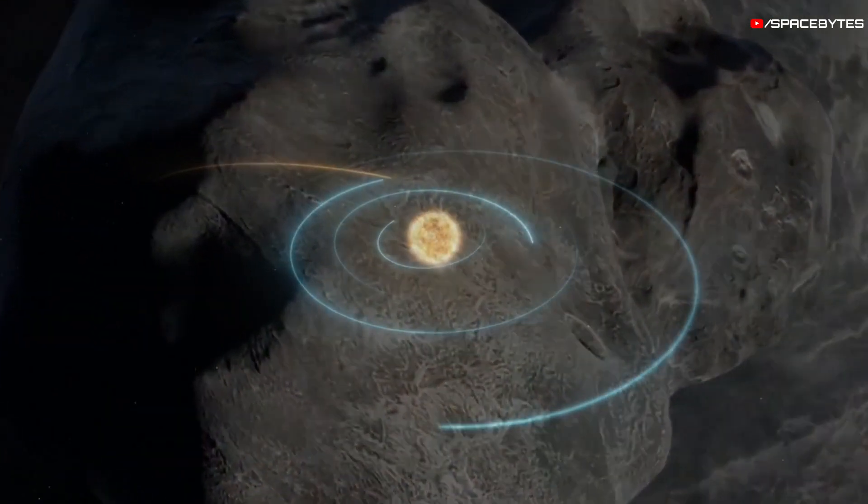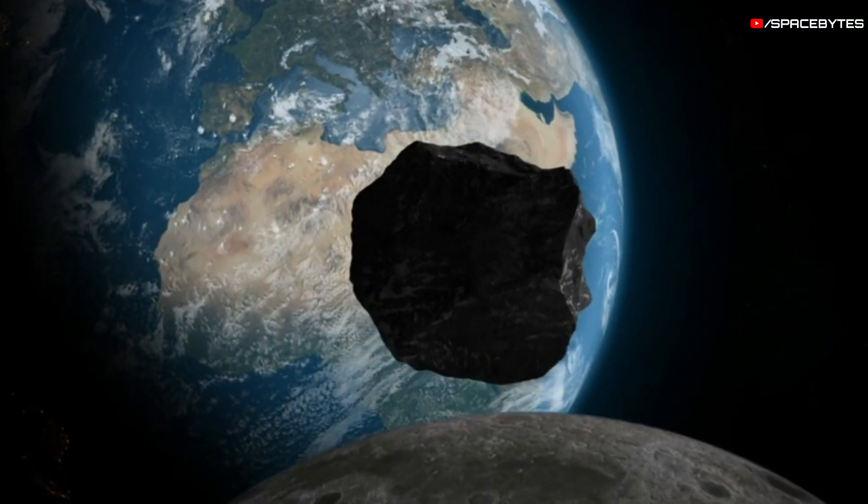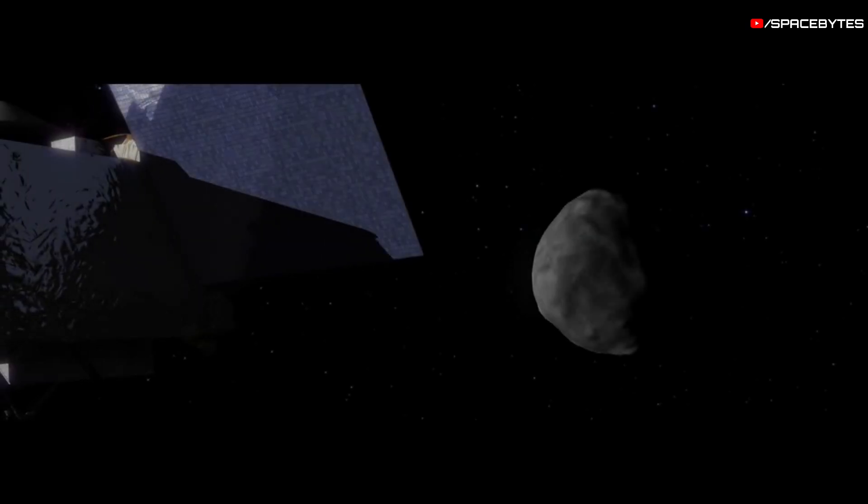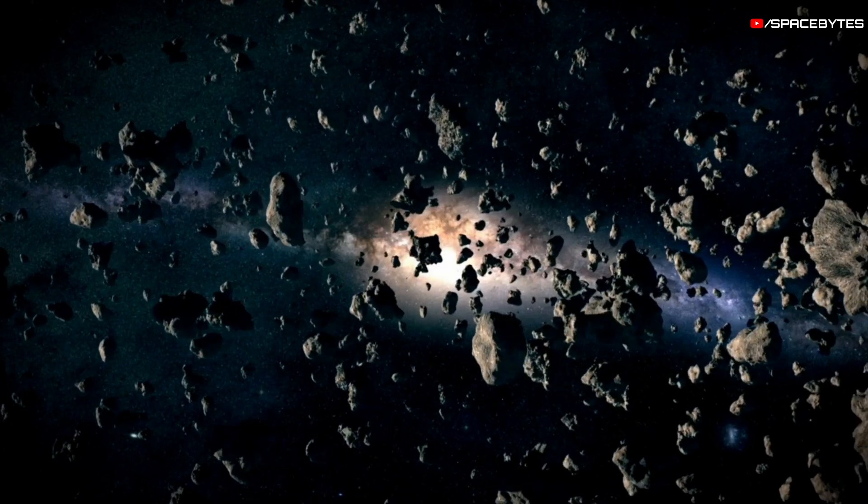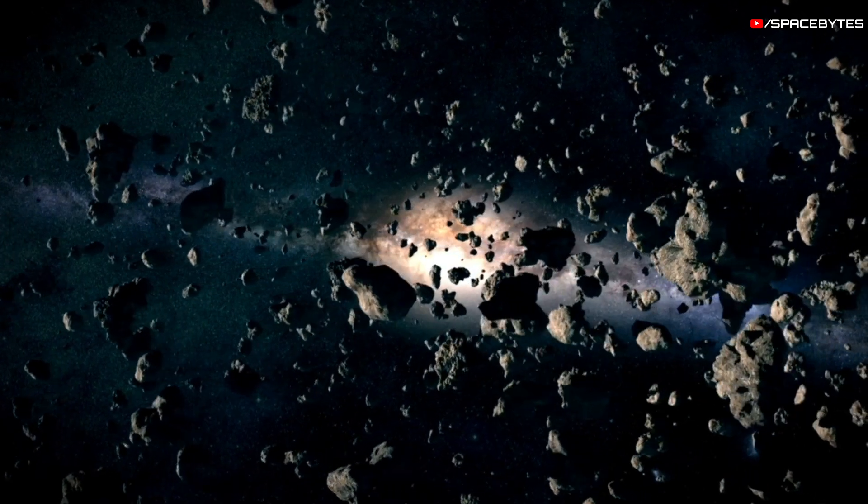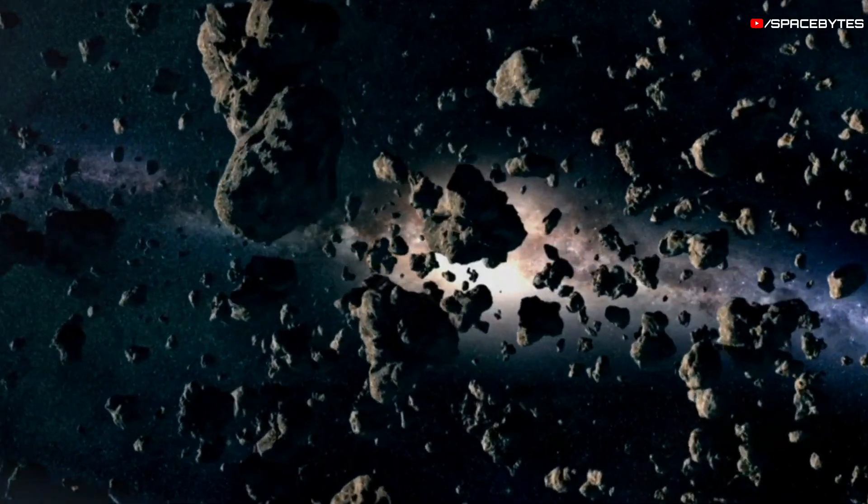Asteroids are rocky bodies that orbit the Sun but are eventually too small to be classified as planets. They're also referred to as minor planets. There are millions of asteroids in our solar system that range in size from hundreds of miles to a few feet wide.